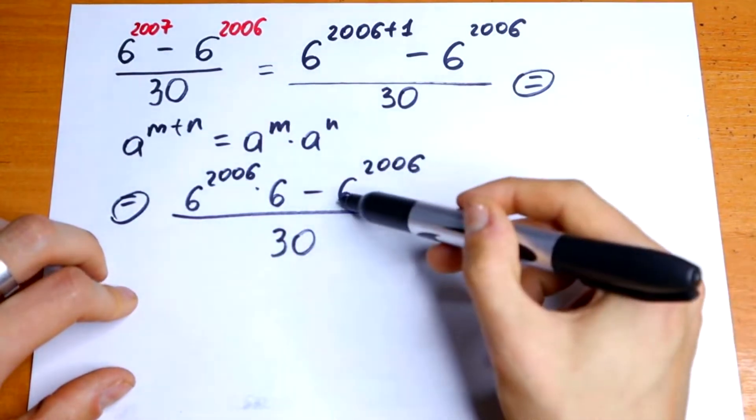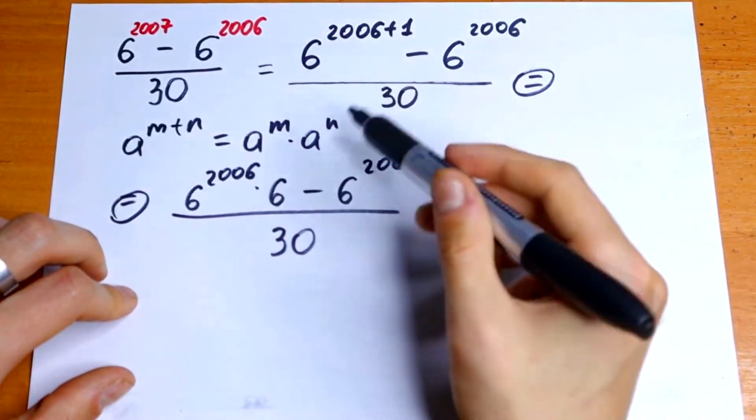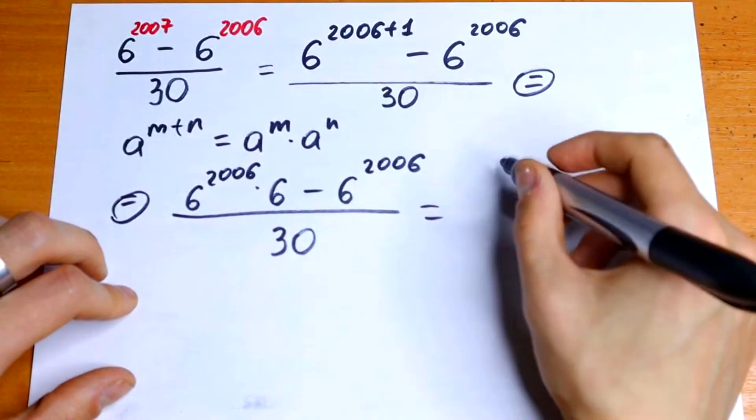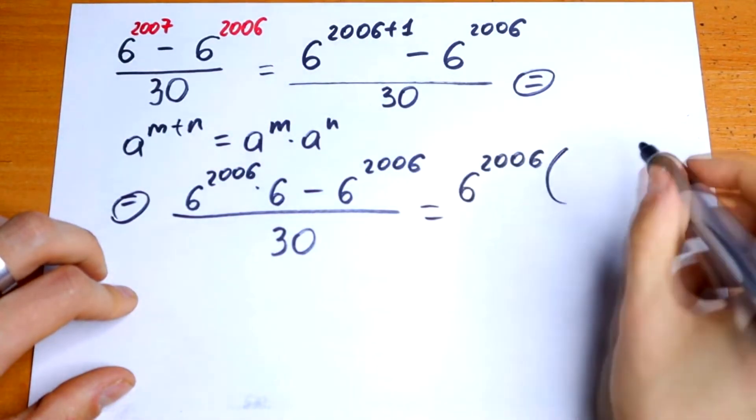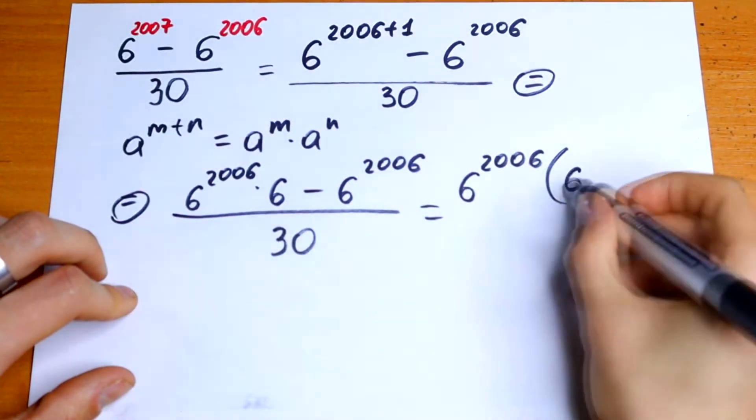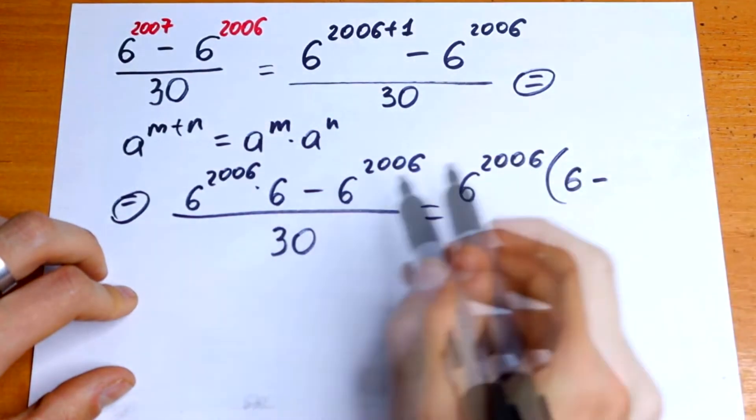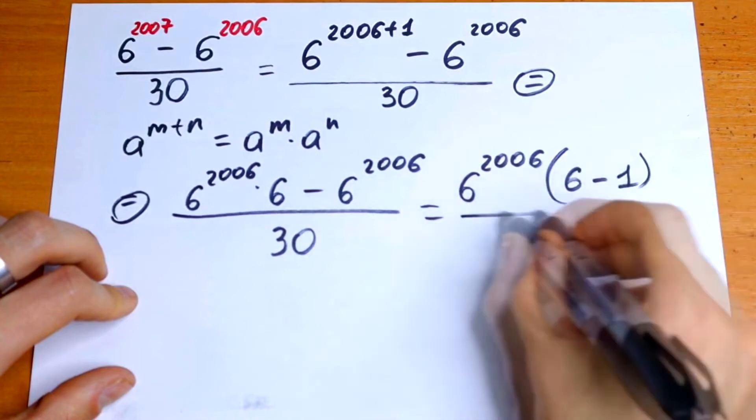So we have the same values right here. We can factor it out as a common. So we have 6 to the 2006 power and in parentheses we will have 6 from here and minus 1 from here and over 30.